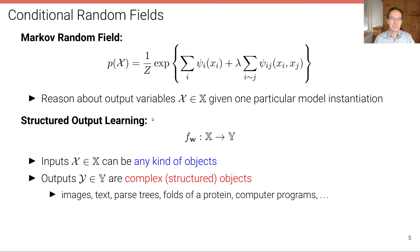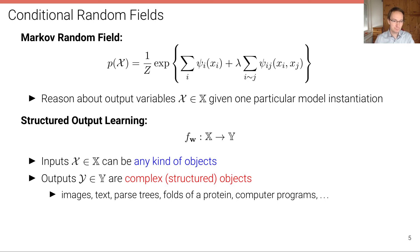In structured output learning we want to learn a mapping f with parameters w from some input space x to an output space y, where the outputs are complex structured objects. The outputs could be images, semantic segmentation maps, text, parse trees, computer programs, etc. We swap the variable names now to define conditional random fields: the output variables become y, and the inputs are x.